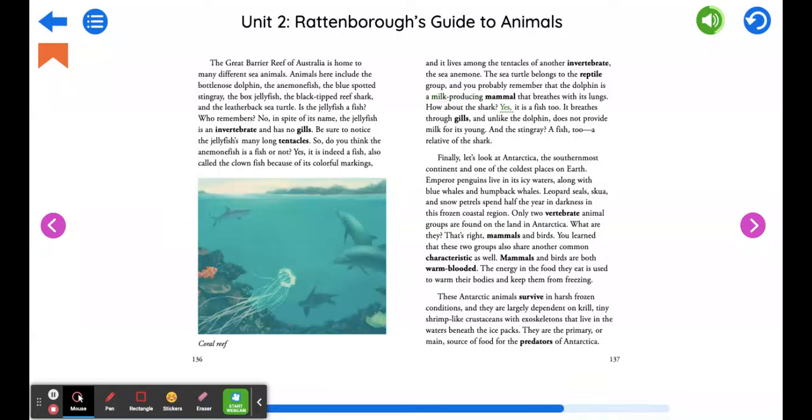And you probably remember that the dolphin is a milk producing mammal that breathes with its lungs. How about the shark? Yes, it is a fish too. It breathes through gills and, unlike the dolphin, does not provide milk for its young. And the stingray? A fish too. A relative of the shark.